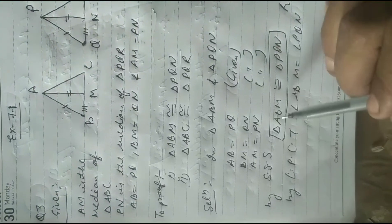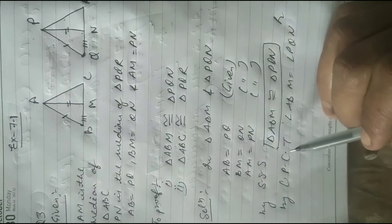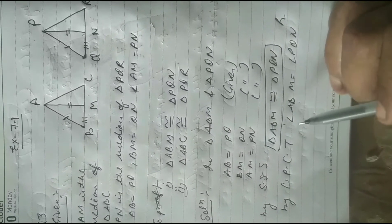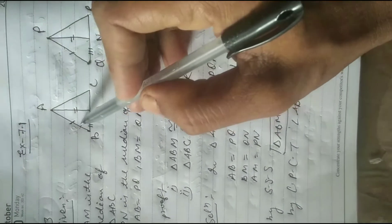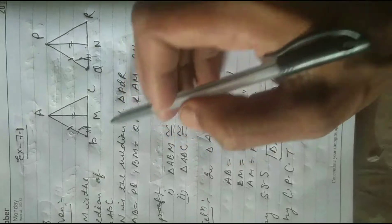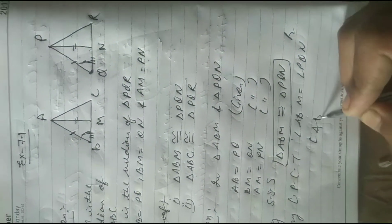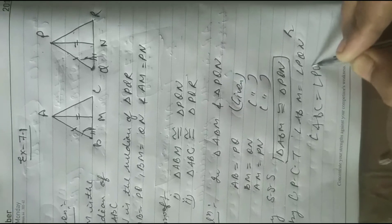So by side-side-side, triangle AVM congruent to triangle PQN. By CPCT, corresponding parts of congruent triangles, angle AVM is equal to angle PQN. This angle is also called angle PQR.